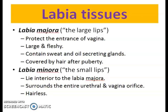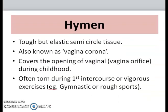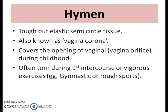Moving on to the labia tissues: the labia majora (meaning 'large lips') protect the entrance of the vagina. They contain sweat and oil-secreting glands and are covered by hair after puberty. The labia minora ('small lips') lie interior to the labia majora, surround the urethral and vaginal orifice, and are normally hairless.